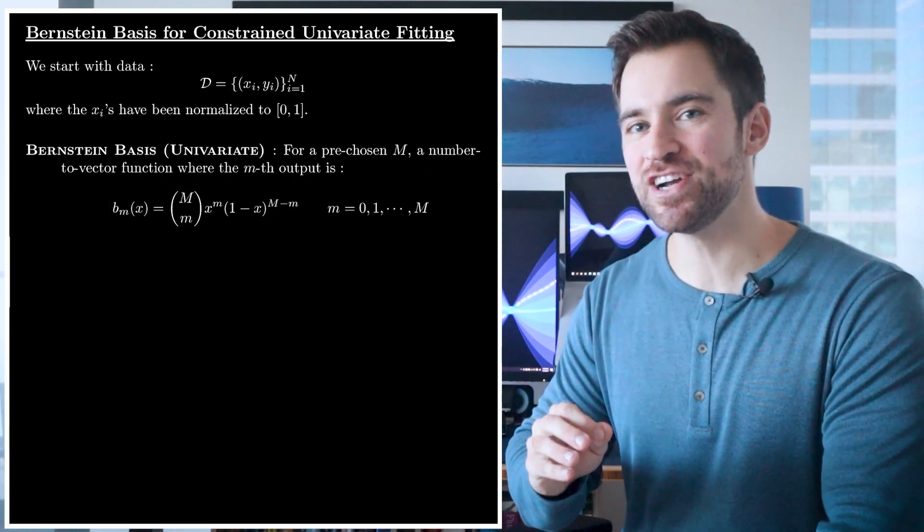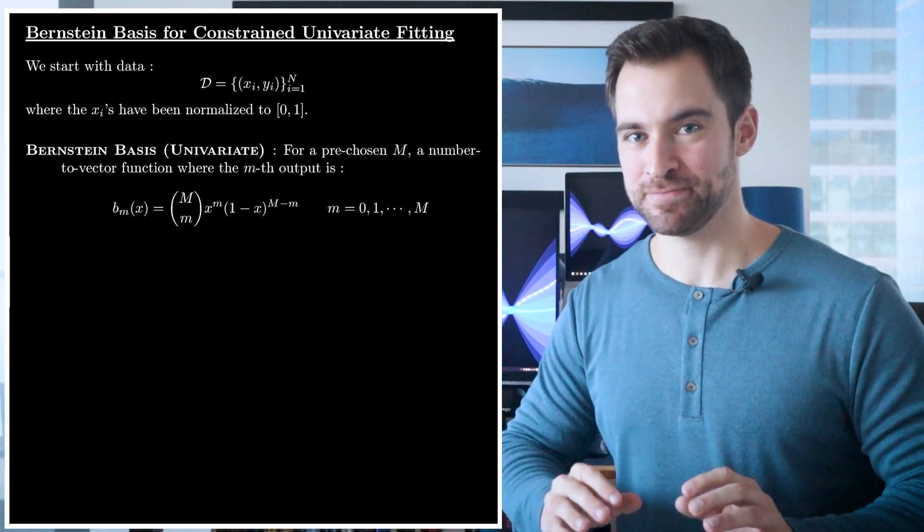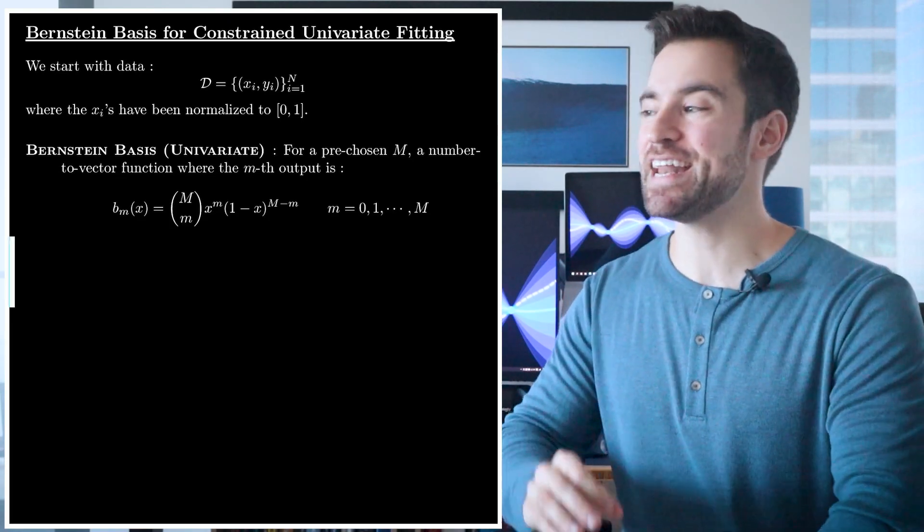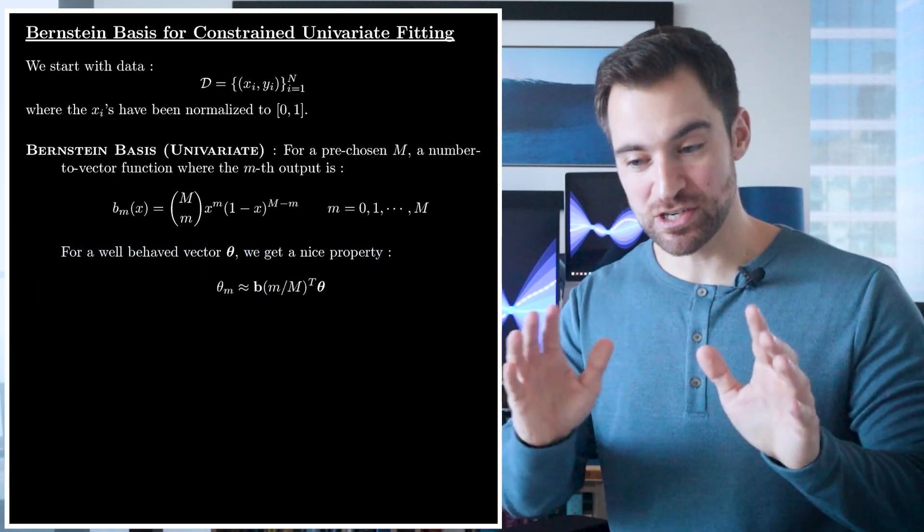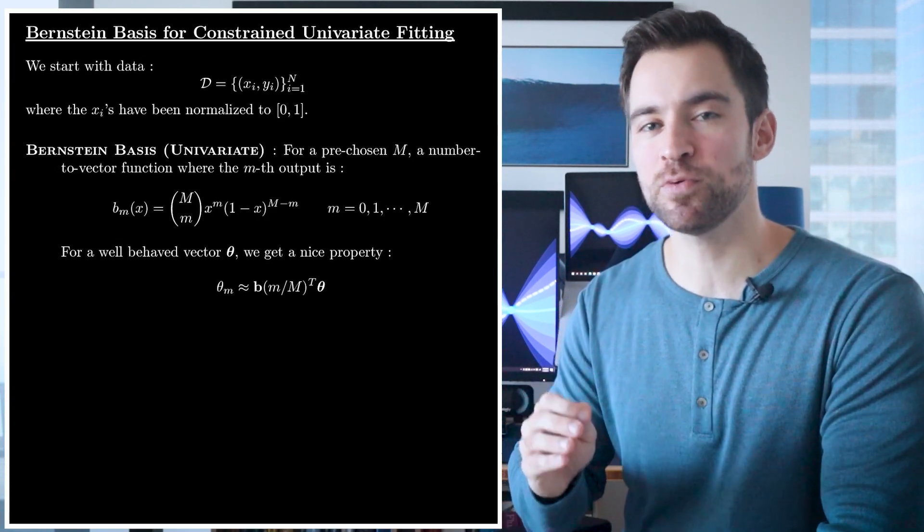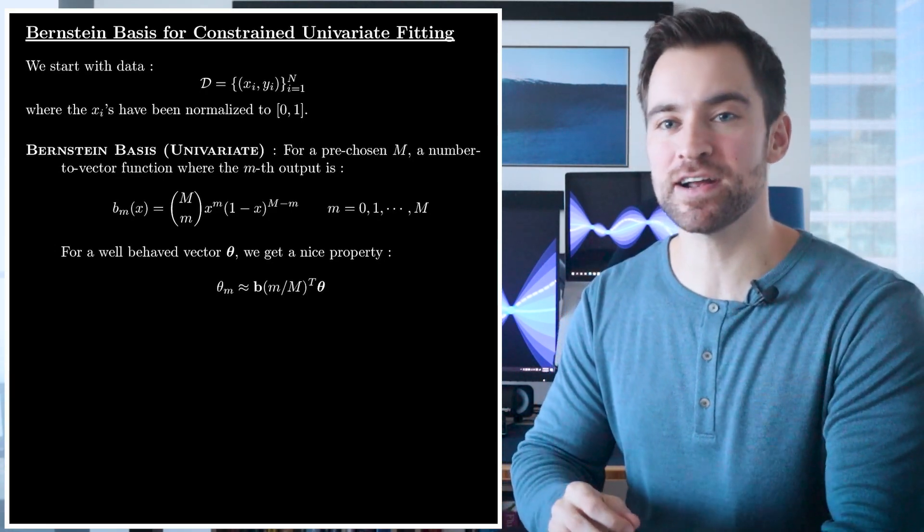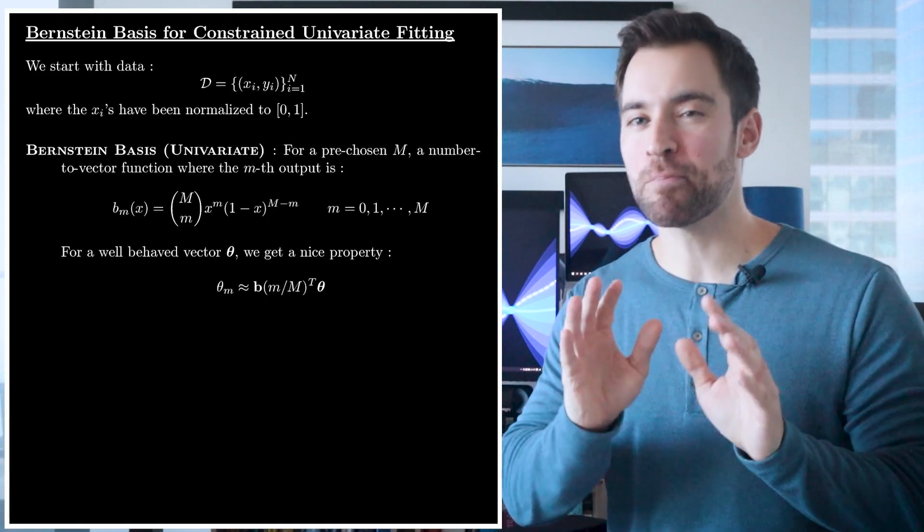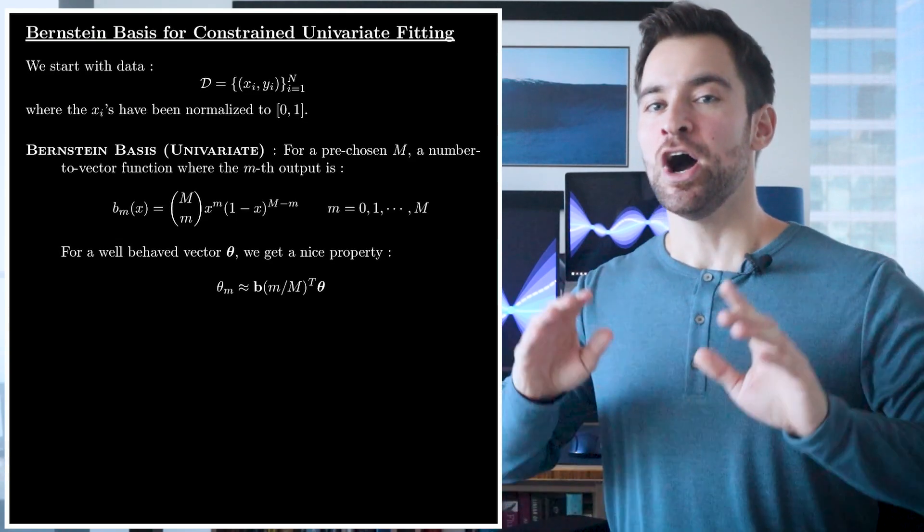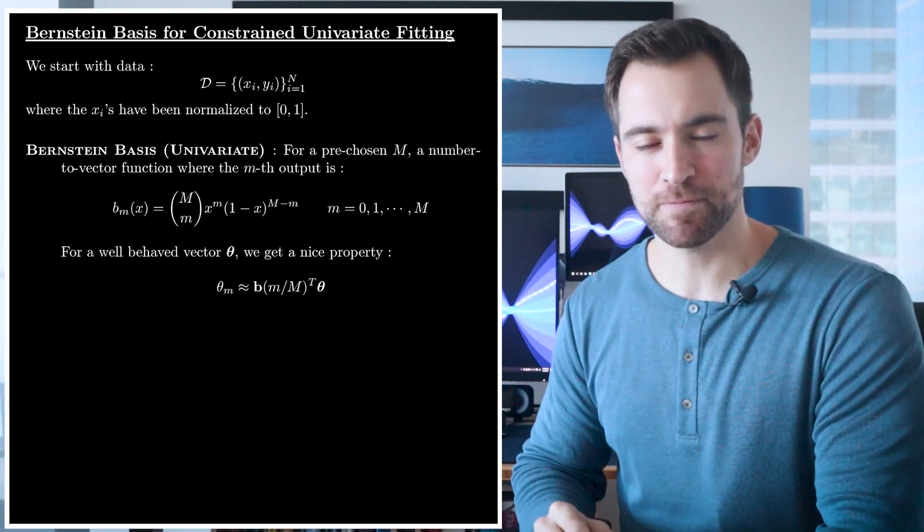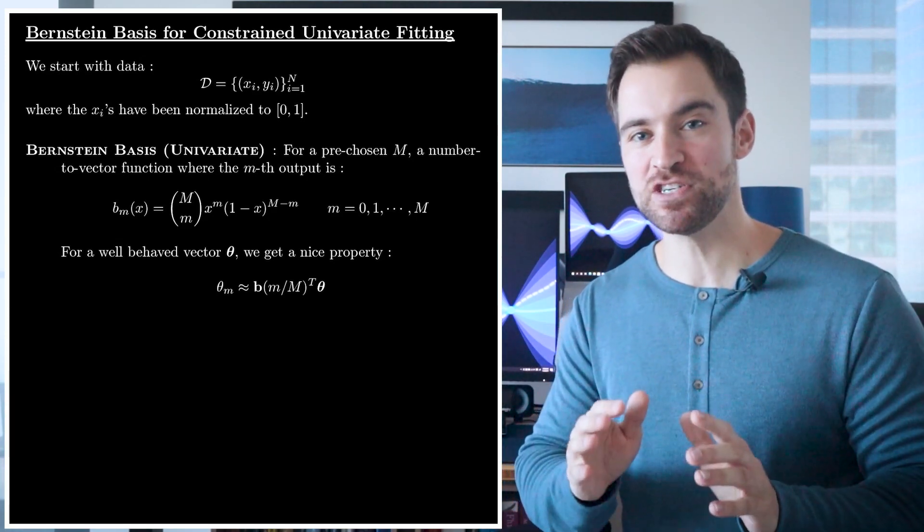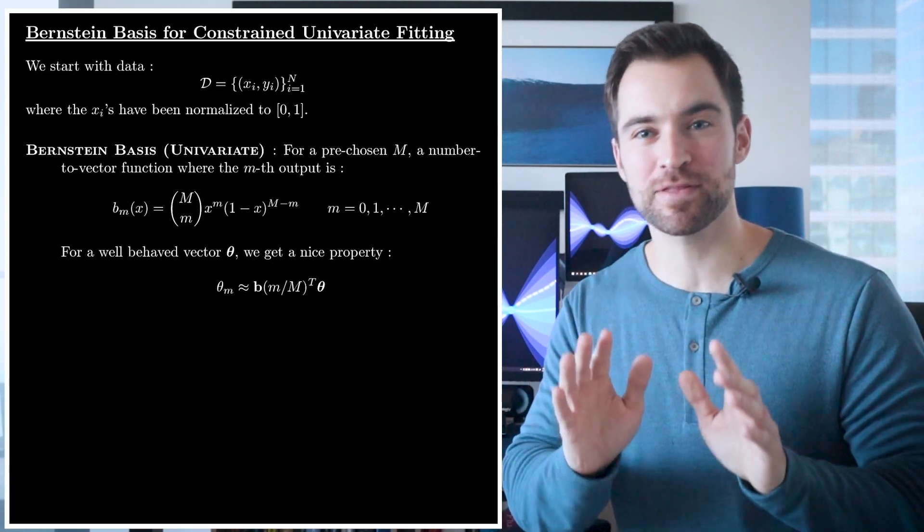In fact, that observation allows us to get to the punchline of the Bernstein basis. Ready? Okay, for a given well-behaved coefficient vector theta, we get this nice property, which I will call the nice property because it's very nice. What it means is if you plug in one of those equally spaced points into the basis expansion and then take its dot product with the coefficient vector, then you'll get back approximately the coefficient of the basis function associated with that point. Okay, not a simple sentence, so I'll say it differently. If you plug in m over capital M into the basis expansion and then take a dot product with that coefficient vector, then you'll get something close to the m-th coefficient.